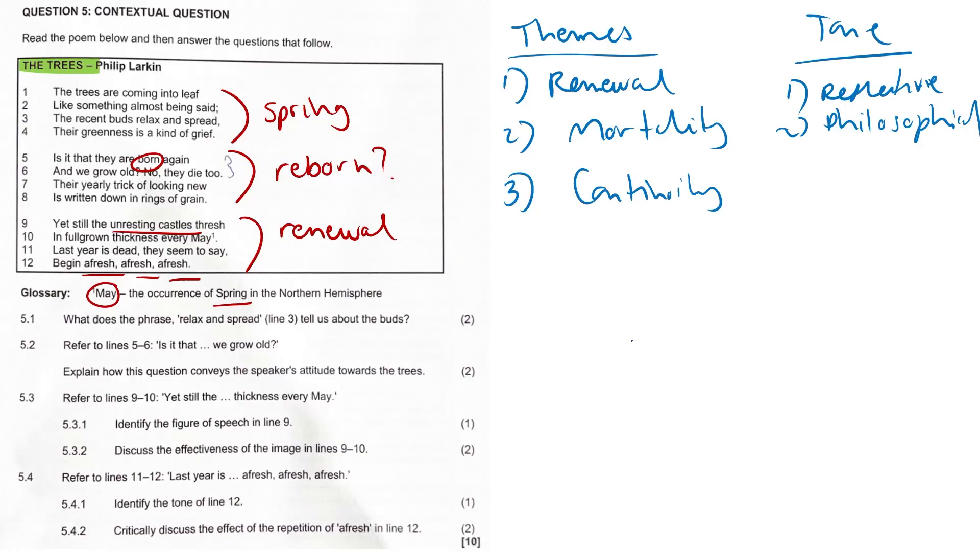5.1: What does the phrase 'relax and spread' in line 3 tell us about the buds? It shows that the buds are opening up gently and naturally. As spring arrives, the phrase suggests a sense of ease and growth, and this reflects how the trees unfold into new life after winter.